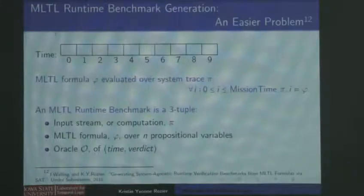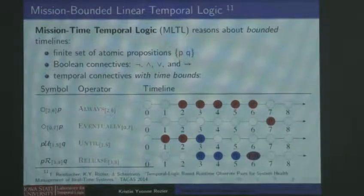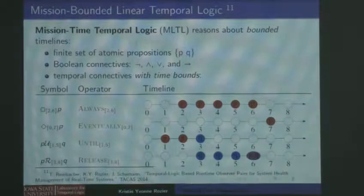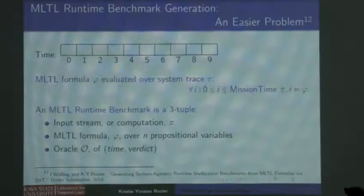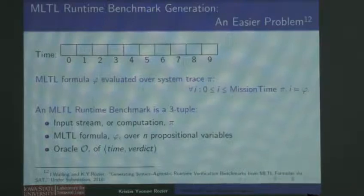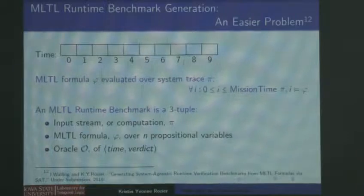One of the first things we did is solve an easier problem: if we have formulas in MLTL and evaluators, we need to benchmark them. There are no existing benchmarks for this logic yet — hopefully there will be this year (shameless plug for the RV benchmark competition). A benchmark is a tuple: we have time — say 9 units, finite with integer bounds — and variable assignments. An MLTL runtime benchmark is a 3-tuple that evaluates, for every point in time, whether our formula is true from that point given a single run of the system.